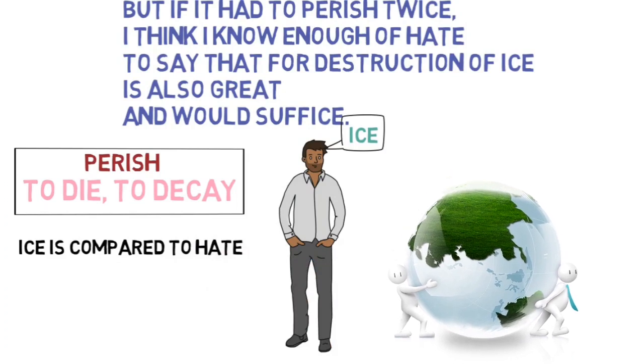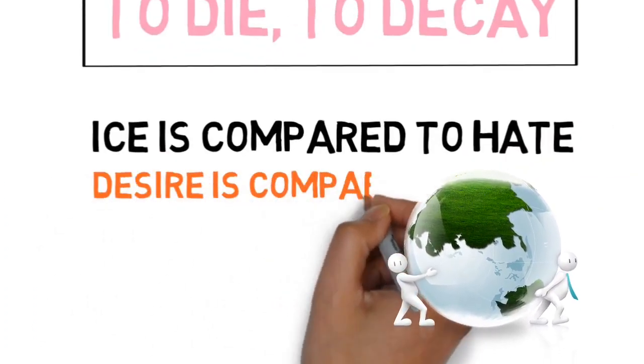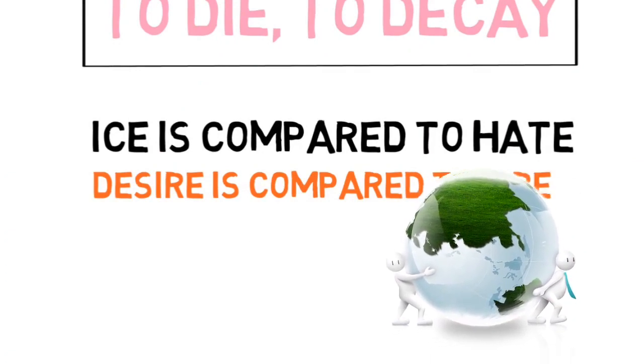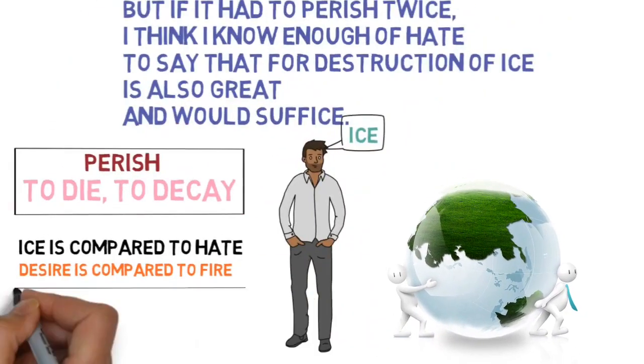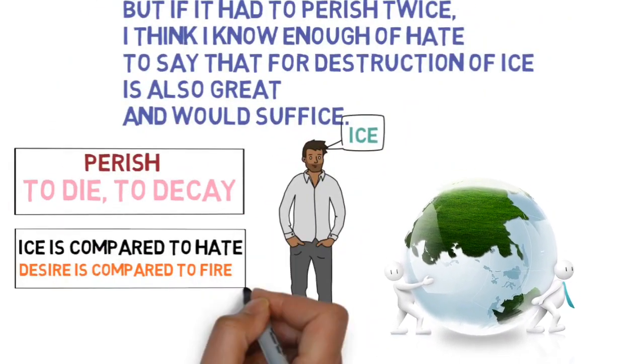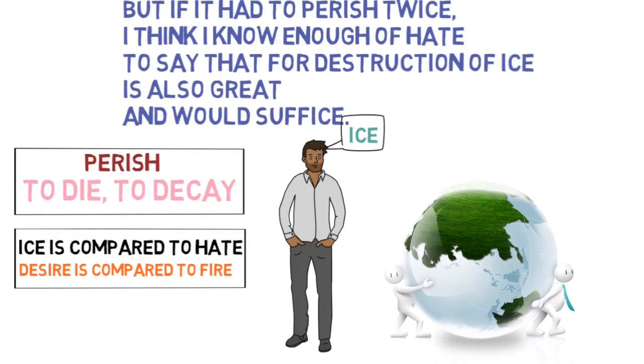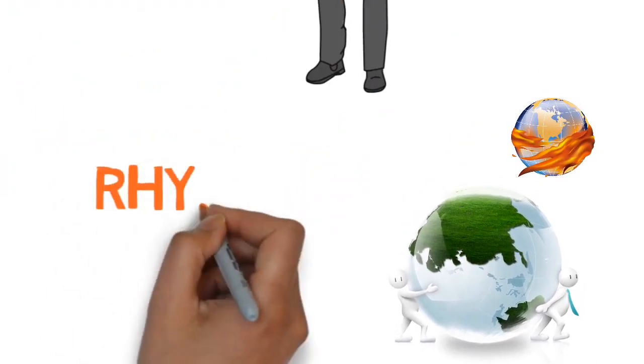So in this poem, ice is compared to hate, and desire is compared to fire. The meaning is that both of these things are enough to destroy this world. Either our desire, or our mutual hatred, whether ice or fire, both are sufficient to end this world.